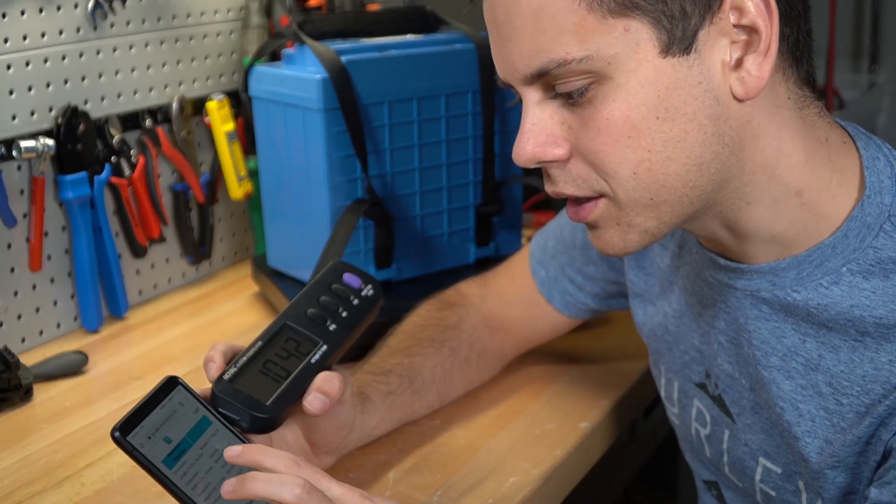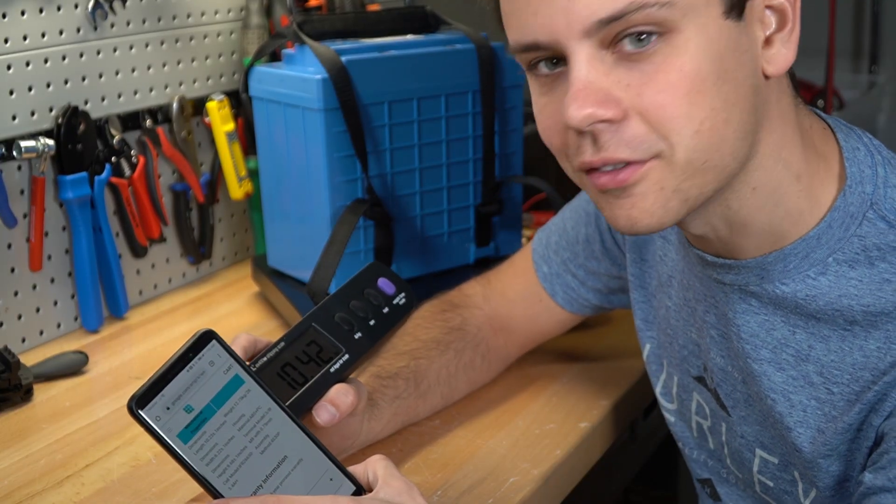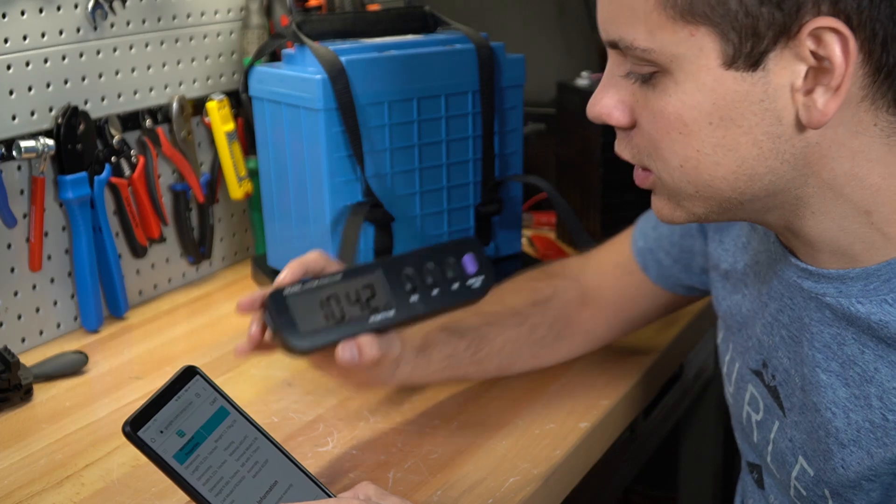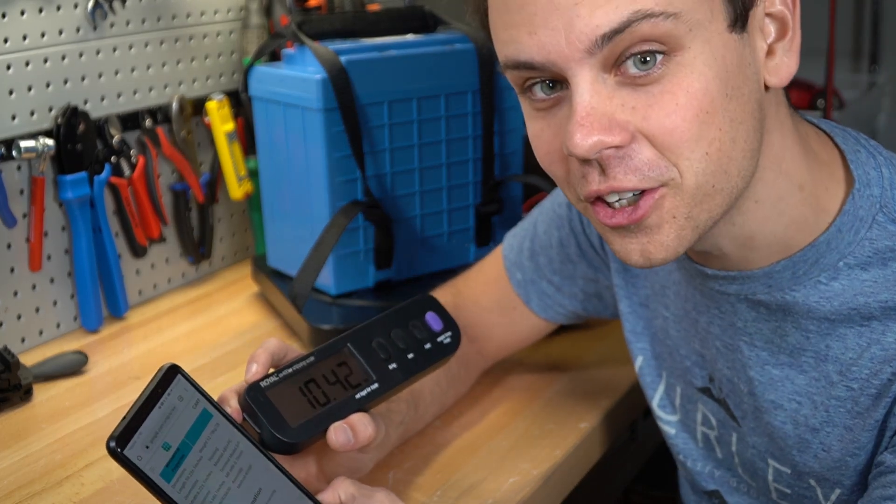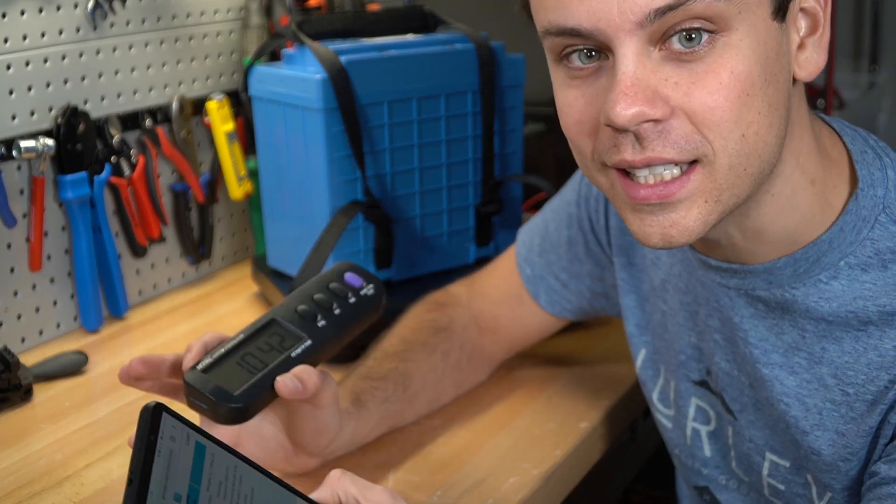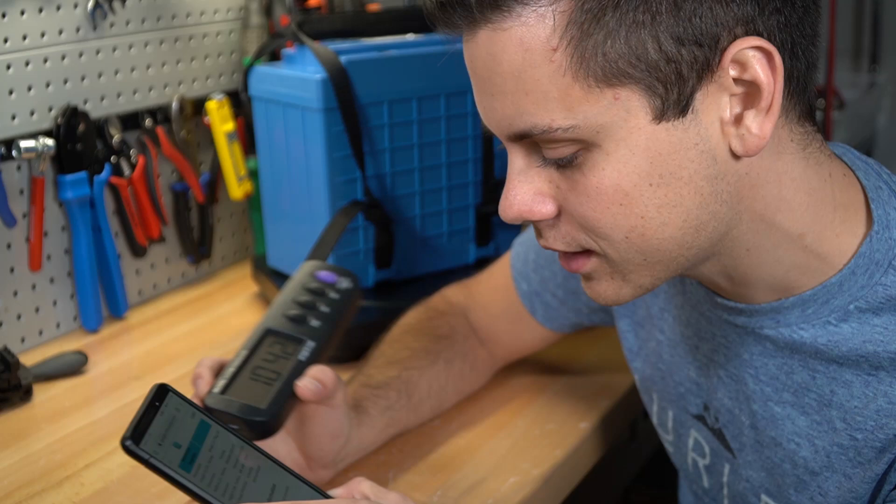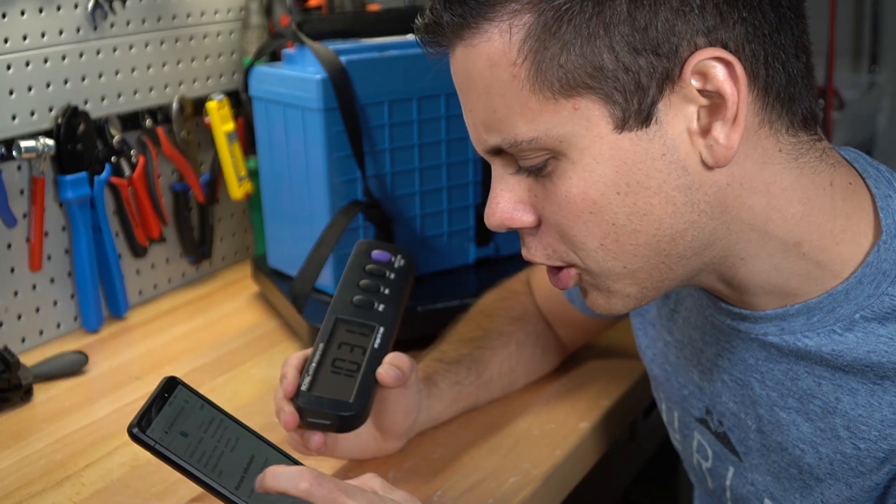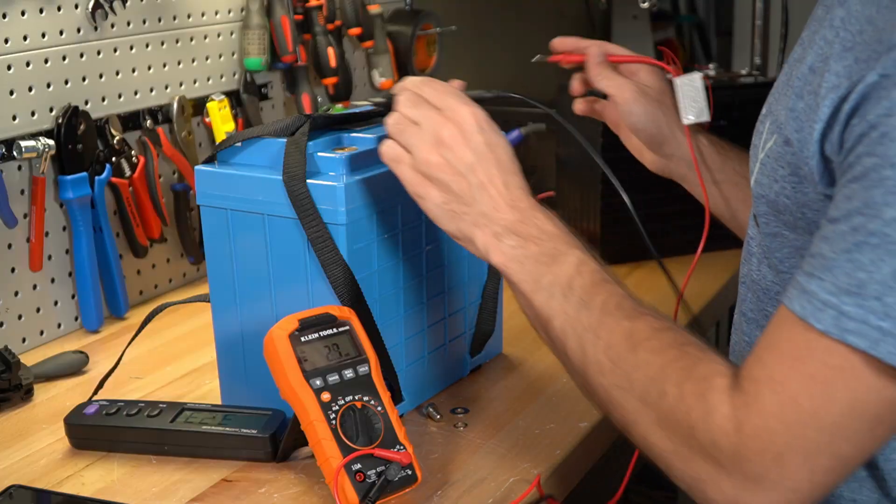Something I just noticed is that the Renogy is twelve point seven five kilograms but this clone is ten point four two. So this might actually be a totally different battery on the inside. But this might be the shipping weight so it's hard to tell. Now let's test the voltage.